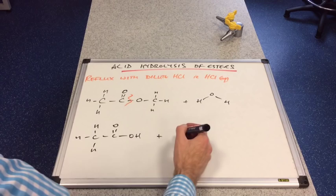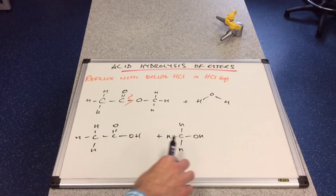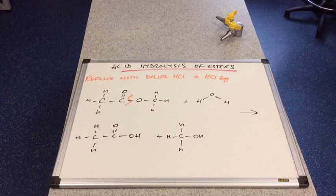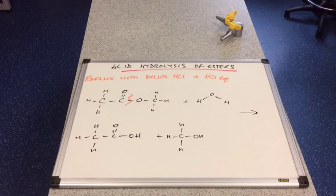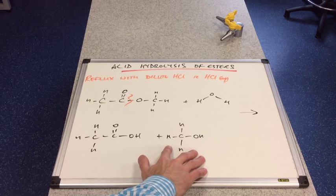And we've got an H left for the water, which will obviously go on with that O there. CH3, CH3, OH. So we are making a carboxylic acid and an alcohol. So effectively what we've done is we've reversed the esterification process. So an ester reacts with water in the presence of acid and produces carboxylic acid and alcohol.